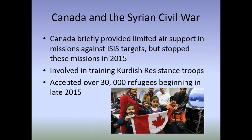What was Canada's role? Canada briefly provided limited air support in missions against ISIS targets, stopping these missions in 2015 when the Trudeau government took office. There are still Canadian troops involved in training Kurdish resistance troops. Perhaps the most significant way Canada was involved was by accepting over 30,000 refugees beginning in late 2015. Again, we see Canada in its middle power role - not involved in a full-scale invasion, but providing air support, targeting ISIS targets, training Kurdish troops, and perhaps most importantly, accepting displaced people and giving them a home when there was nowhere else for them to go.